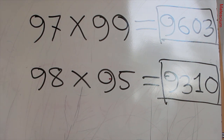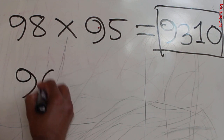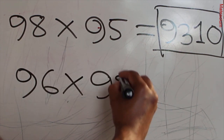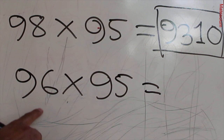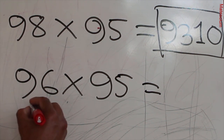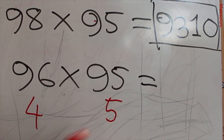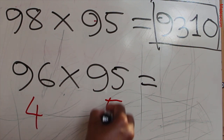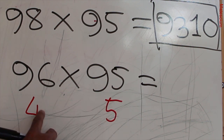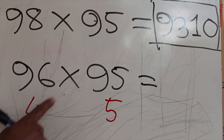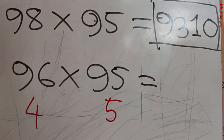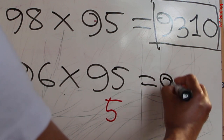Let's try 96 times 95. Apply the same trick. What do we need to make 100? We need 4 for 96, and 5 for 95. Add those: 5 plus 4 is 9. So 91 plus 9 is 100 — write 91 here.